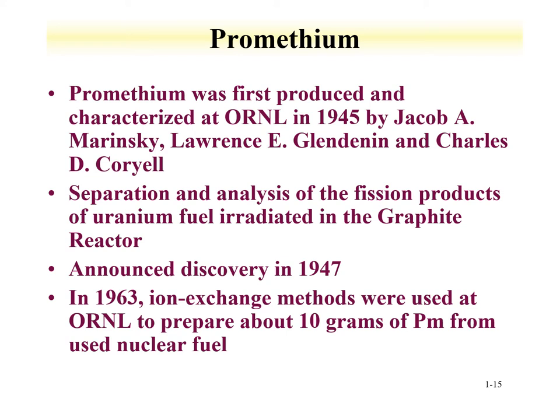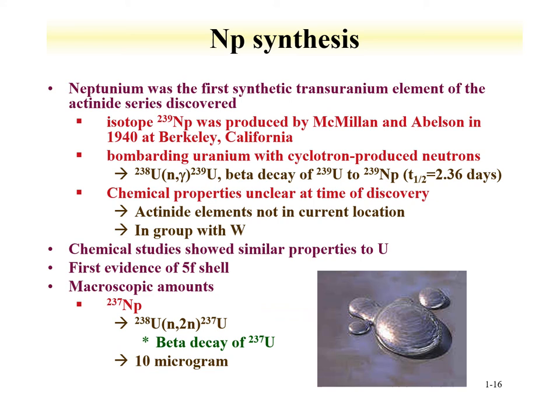Promethium was first produced at Oak Ridge National Laboratory in 1945. It was separated from a fission product — there was considerable work going on in understanding fission reactions and getting materials including plutonium and separating out the lanthanides. It was known that there was a gap in the periodic table, and the expected properties of promethium could be understood. The analysis of fission products of uranium fuel irradiated in the graphite reactor at Oak Ridge showed the presence of this element. It was announced in 1947, two years after discovery, and in 1963 they made about 10 grams of promethium from used nuclear fuel — a large enough amount to do real chemical studies on.